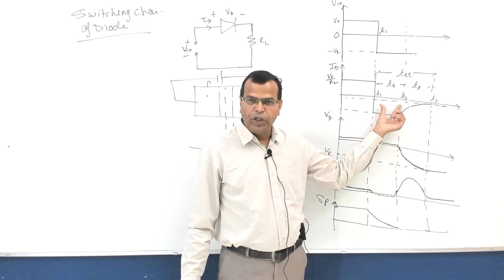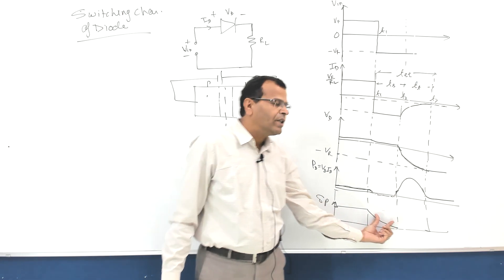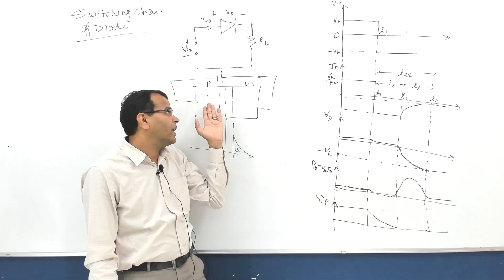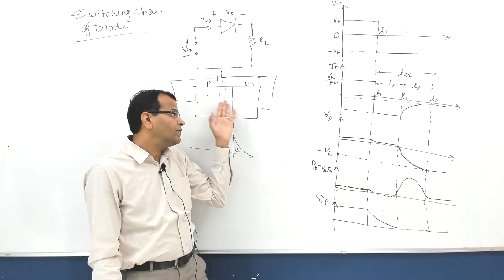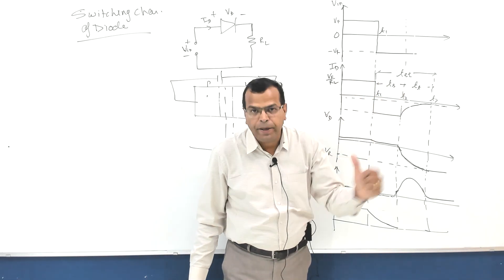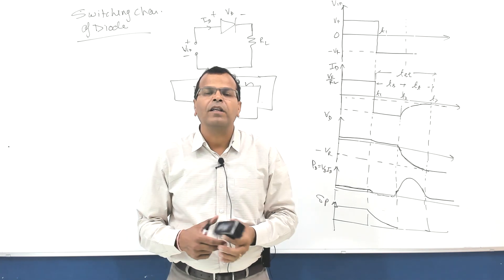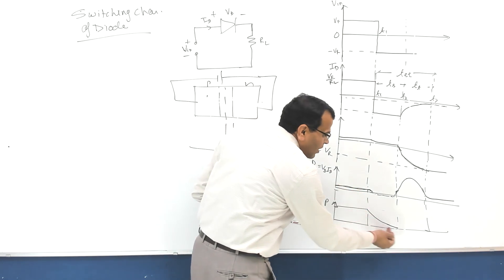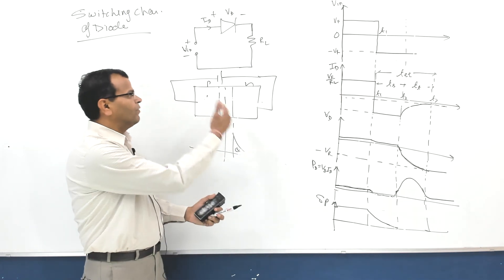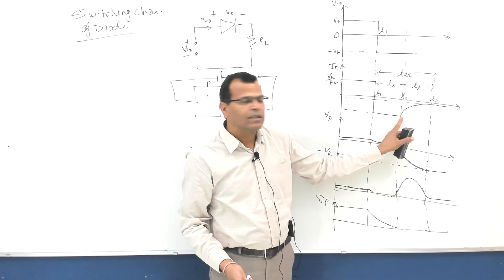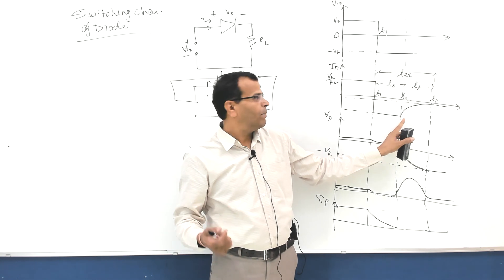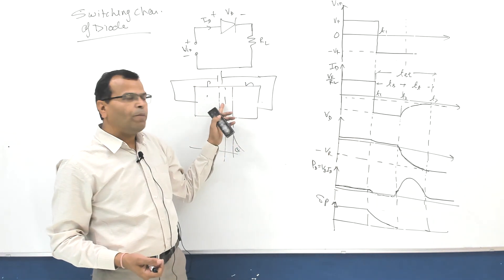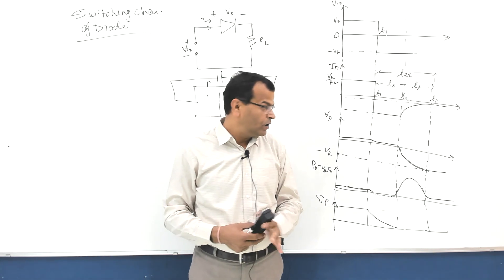The period during which excess minority carriers stored on the N side are shifted to the P side, and excess minority carriers stored on the P side are shifted to the N side, is called storage time. Storage time is indirectly the time required to discharge the storage capacitance. When all the excess minority carriers are removed from the layers, the current is at its reverse level.